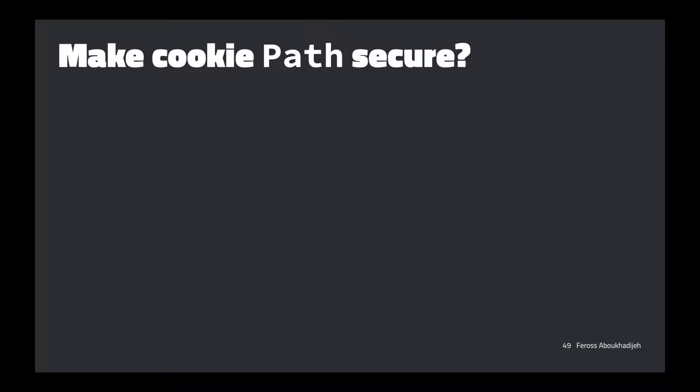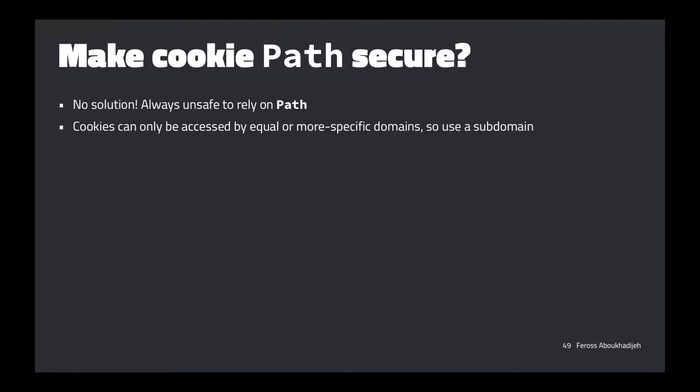So what can we do if we want to enforce a policy where 106a sets a session cookie and only has it be valid and accessible on that particular path? It turns out — no, there's just not a way. It's unsafe to rely on path, and we have to expect that cookies can be accessed.